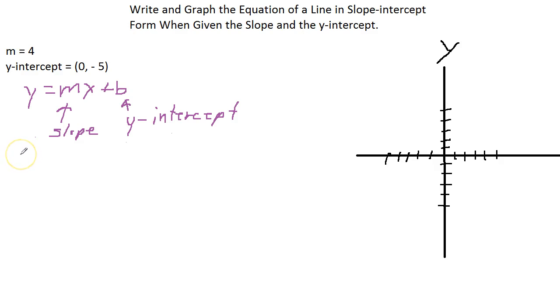All right, so what we do is we just take our formula and we plug 4 in for the m and our negative 5 in for the b. Okay.